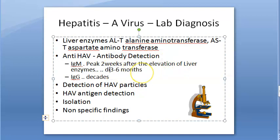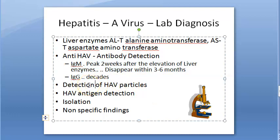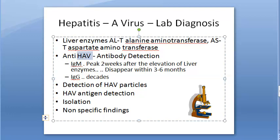IgG antibodies persist for decades. The interpretation is: if IgM is positive for anti-HAV antibody, it indicates acute infection. If the person has IgG antibody against HAV with no IgM, it means past infection or recovery.